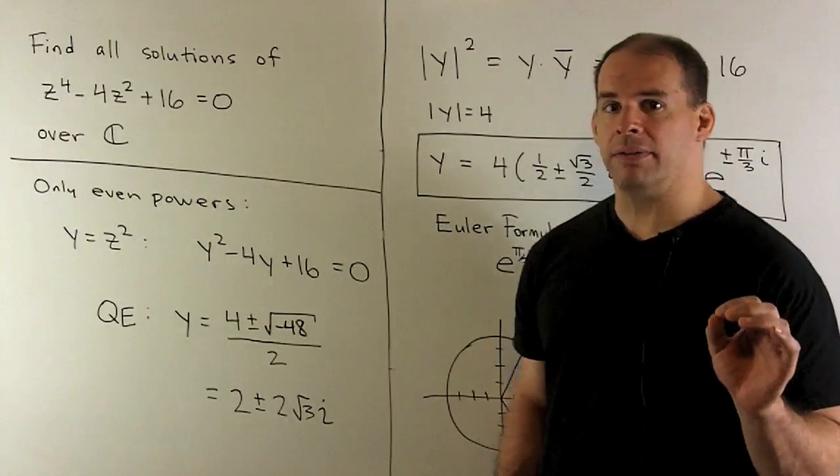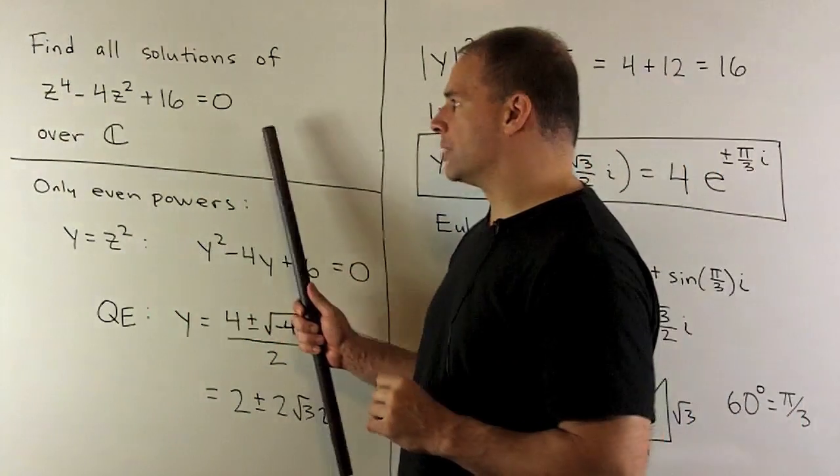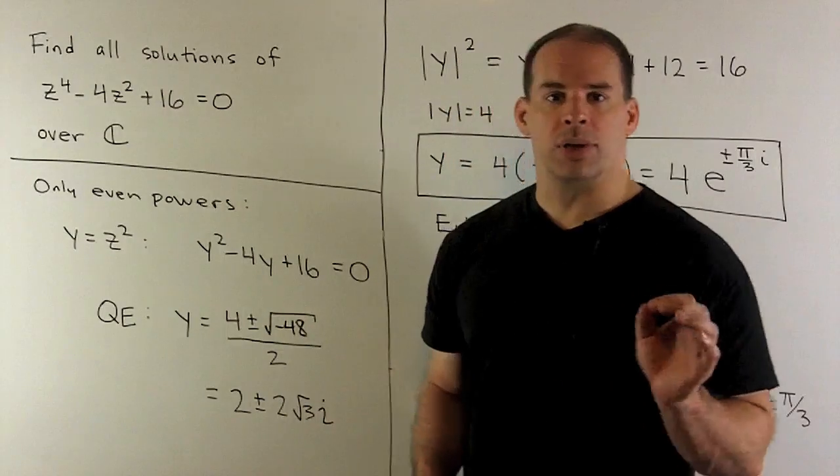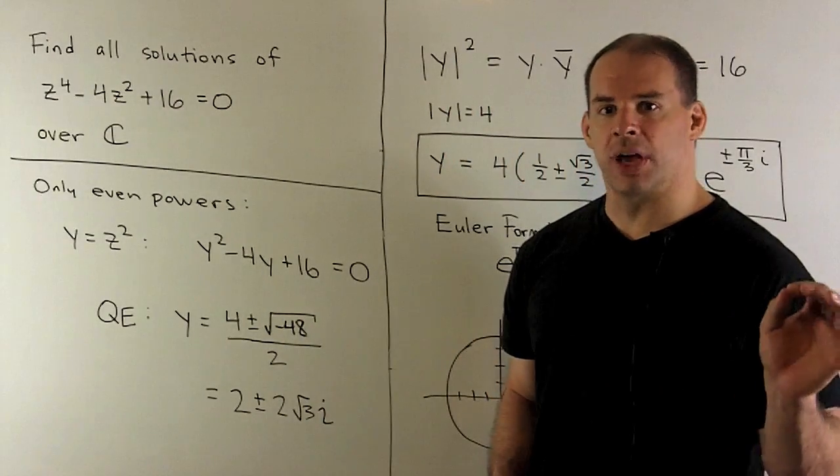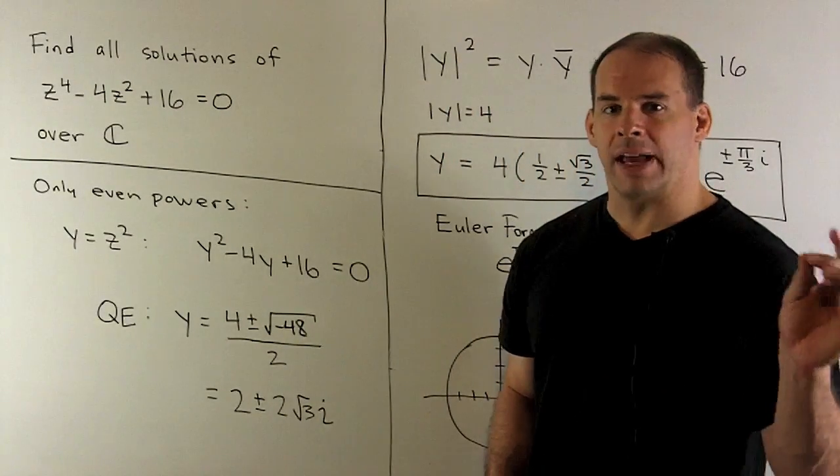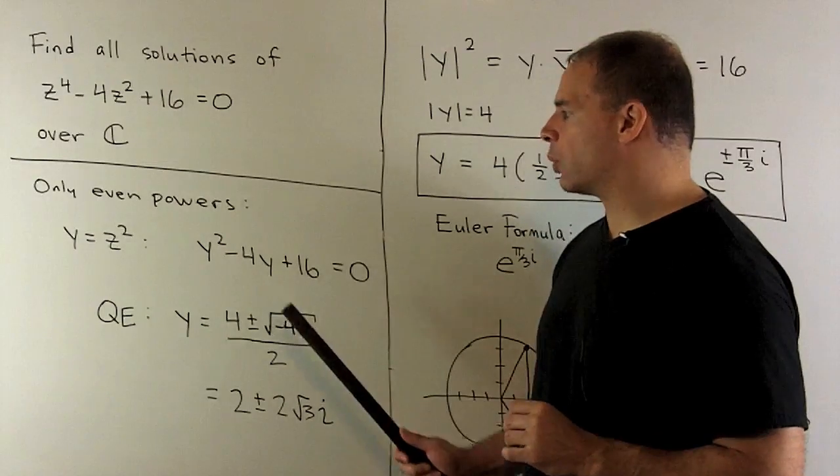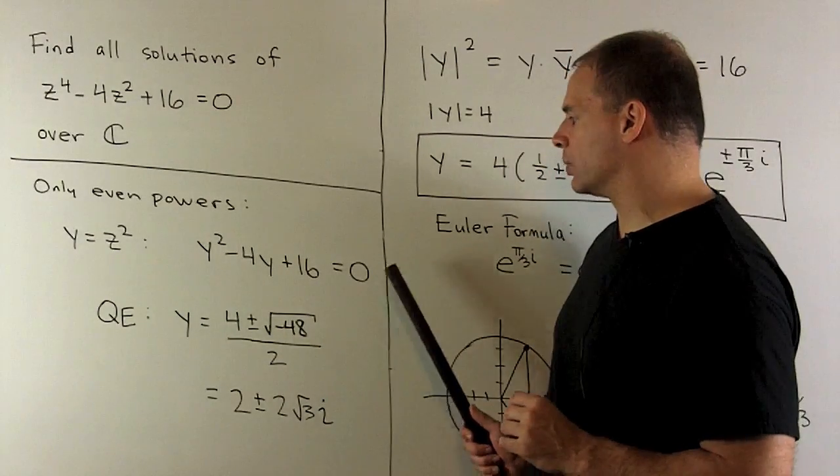To solve, we note we only have even powers of z, so we can let y be equal to z squared and substitute. That gives us a new equation: y squared minus 4y plus 16 equals zero.